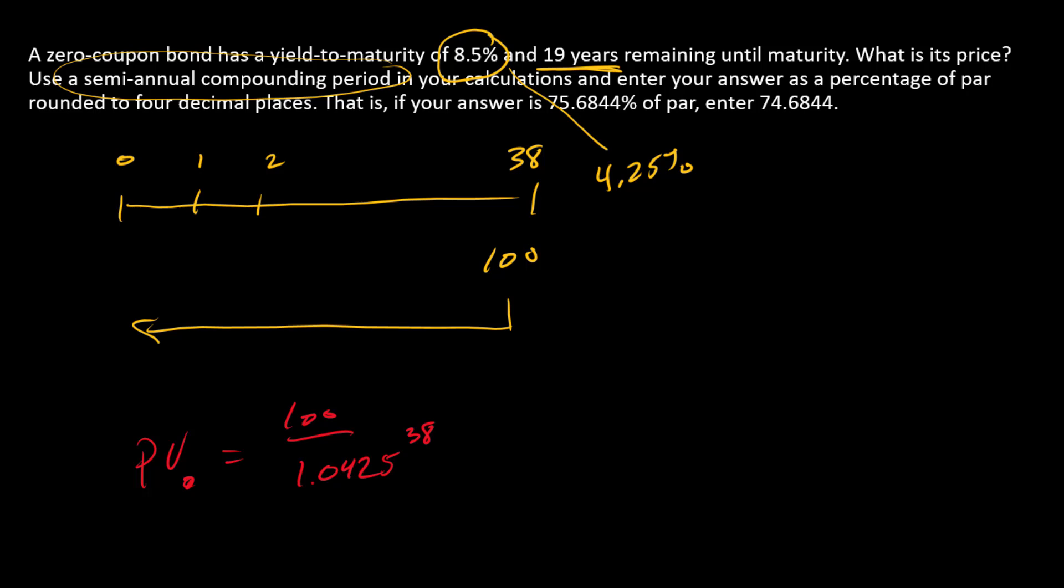Alternatively, we could use a financial calculator and plug 100 into FV, plug zero into payment, 38 into N, and 4.25 into I/Y.